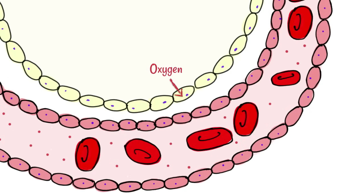Oxygen can diffuse across the cell membrane of the cell that lines the alveolus, and from there it can diffuse across to the outside of that cell. The same thing applies for the lining of the blood capillary, until eventually it diffuses into the red blood cell where it can bind with hemoglobin to form oxyhemoglobin. Similarly, carbon dioxide can also diffuse across these cell membranes and reach the alveolar sac to then exit the body.